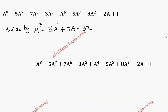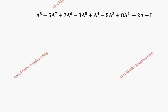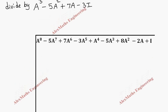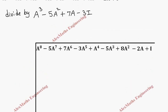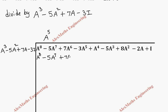We set up the long division. To get A power 8 as the leading term, we multiply the divisor A cubed minus 5A squared plus 7A minus 3 by A power 5. This gives A power 8 minus 5A power 7 plus 7A power 6 minus 3A power 5.